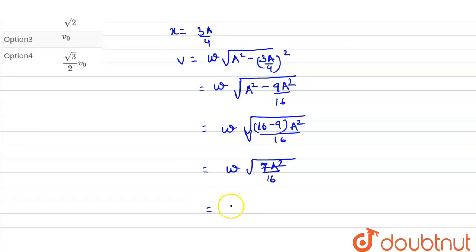This can be also written as under root 7 upon 4 omega into A.